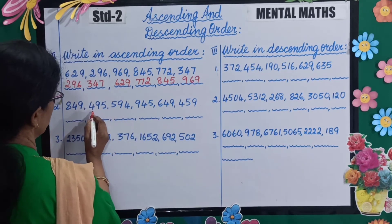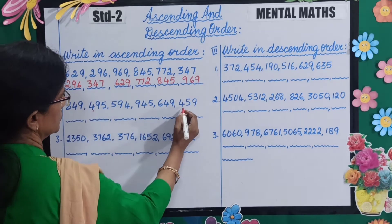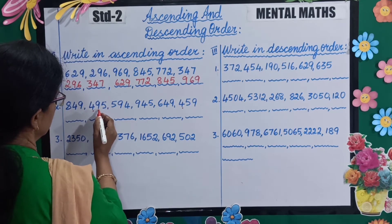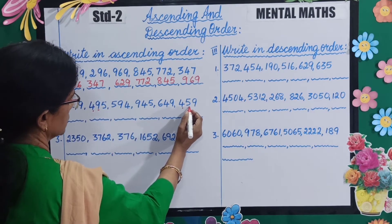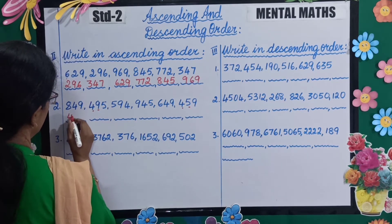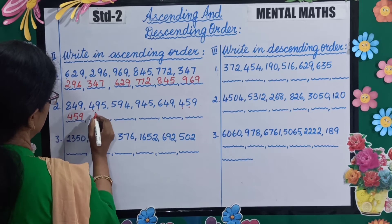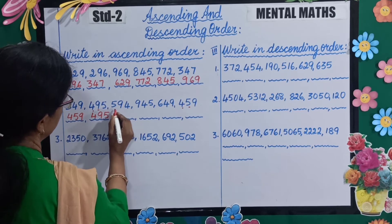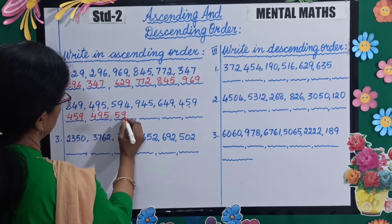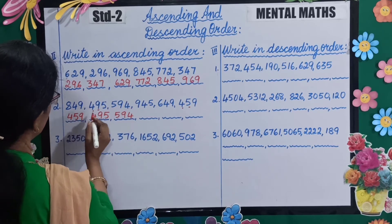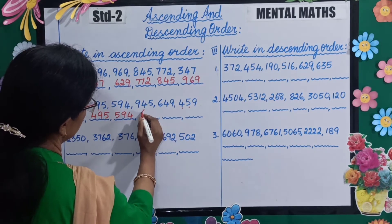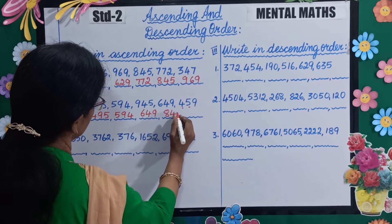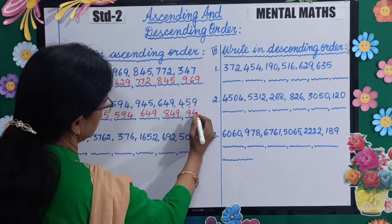Now here 4 is the smallest hundreds digit, but both 459 and 495 start with 4. So you go to the next digit — 5 versus 9 — so 459 is the smallest. Write: 459, then 495, then 594, then 649. Very good children. Then 849, and last is 945.